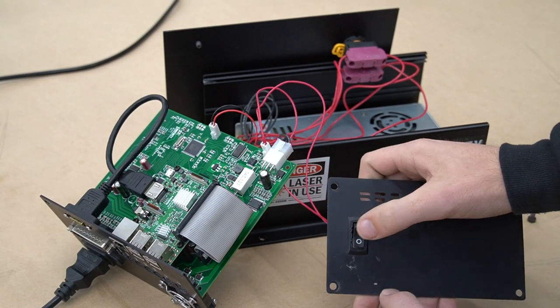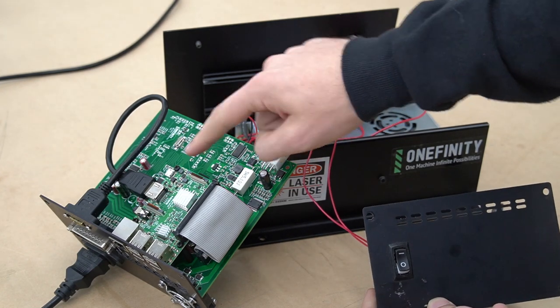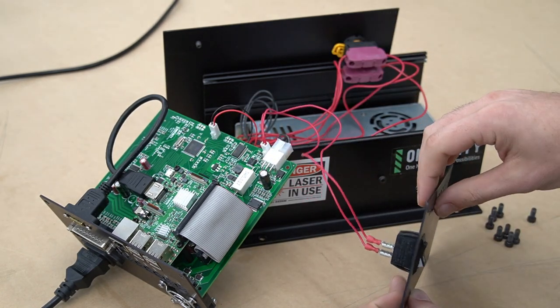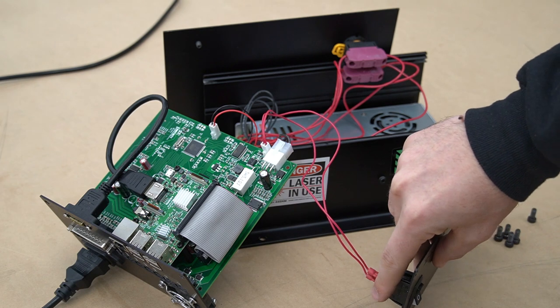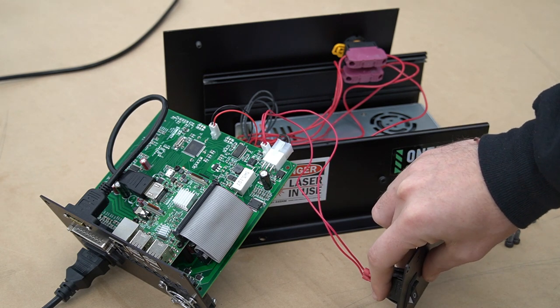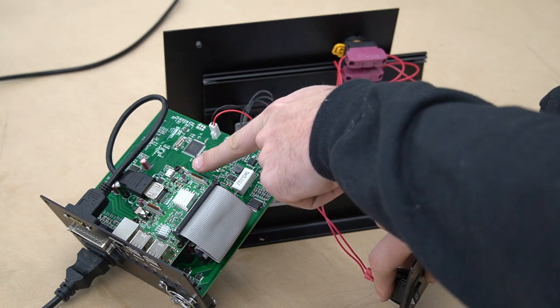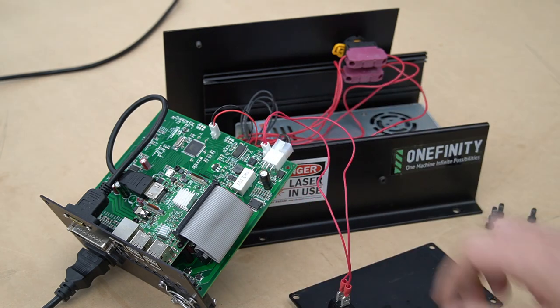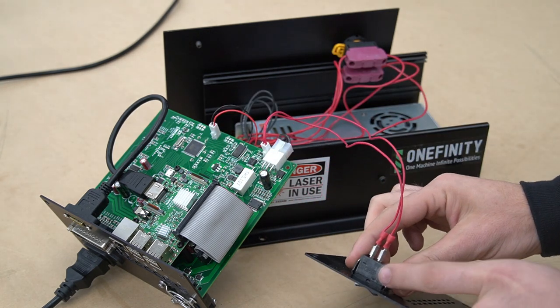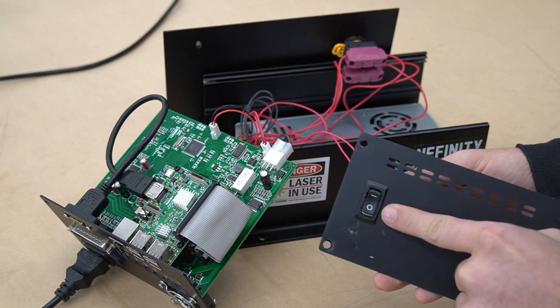Now that we know our Pi isn't getting power, we're going to test the switch in question. We're going to do that by keeping an eye on the LED indicators and completing the circuit on the back of the switch. This will not electrocute you. You can see that the LED indicators are now turning on, so we know that we have a dirty or defective switch.